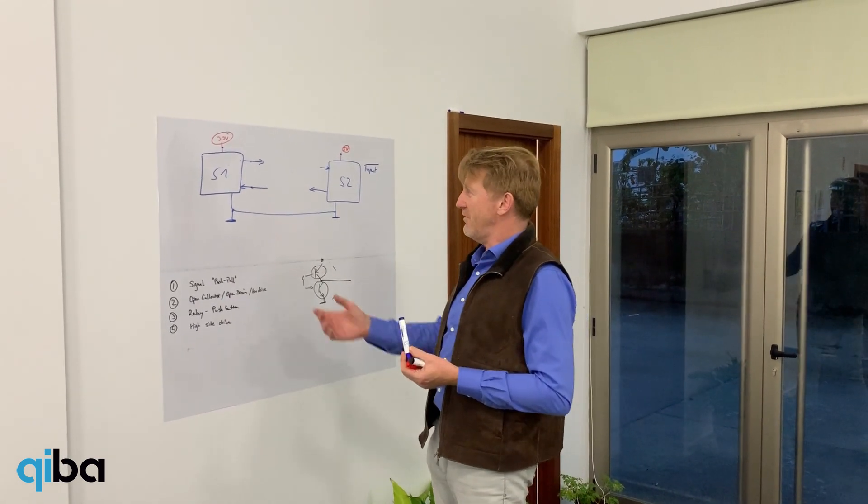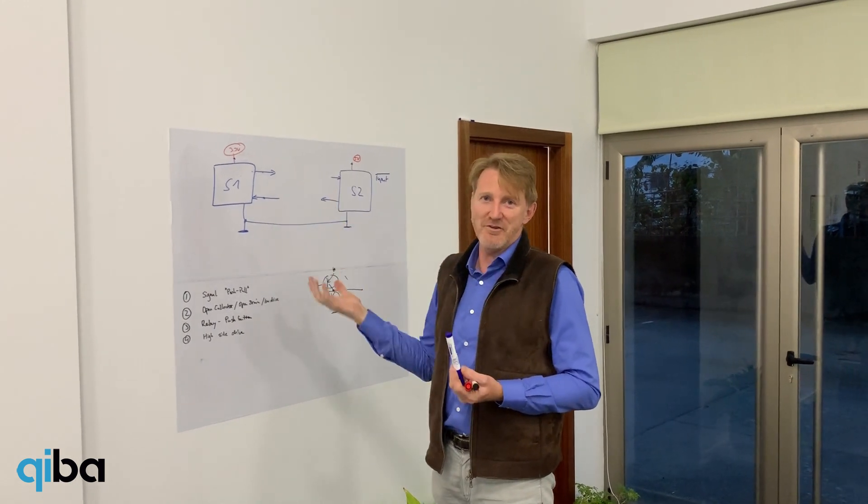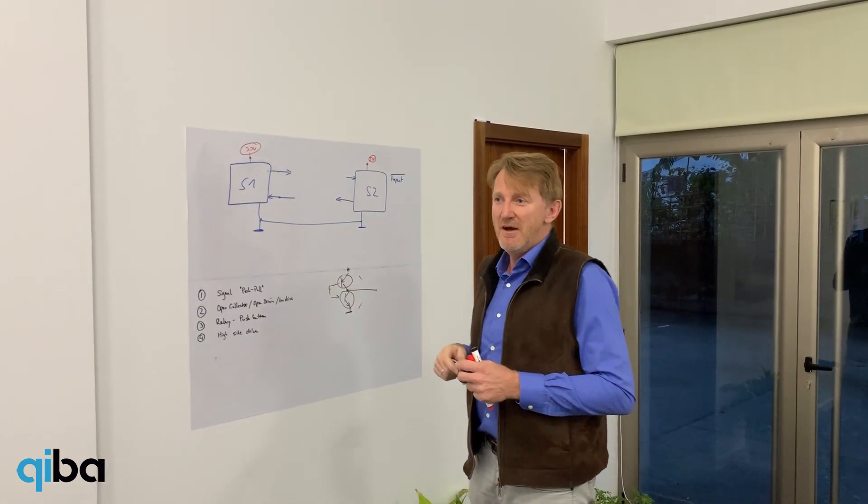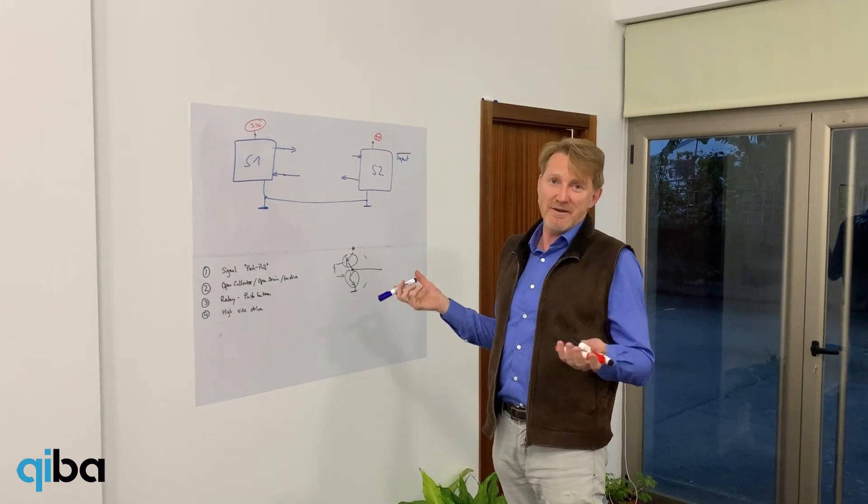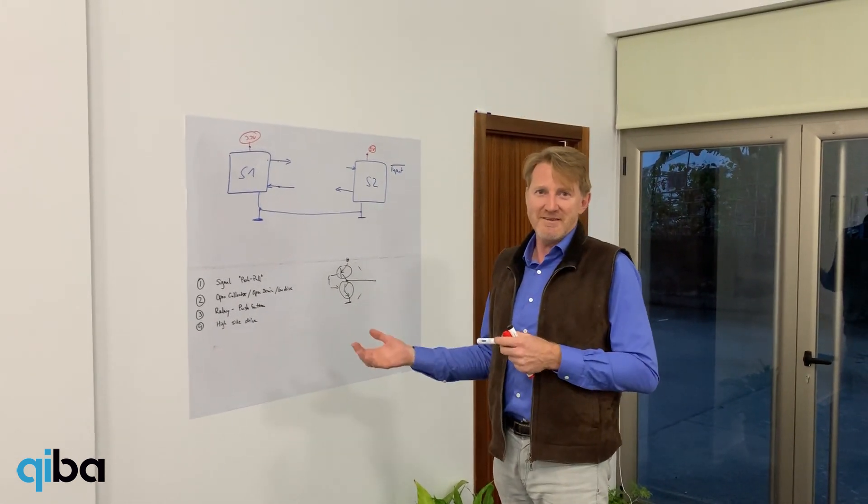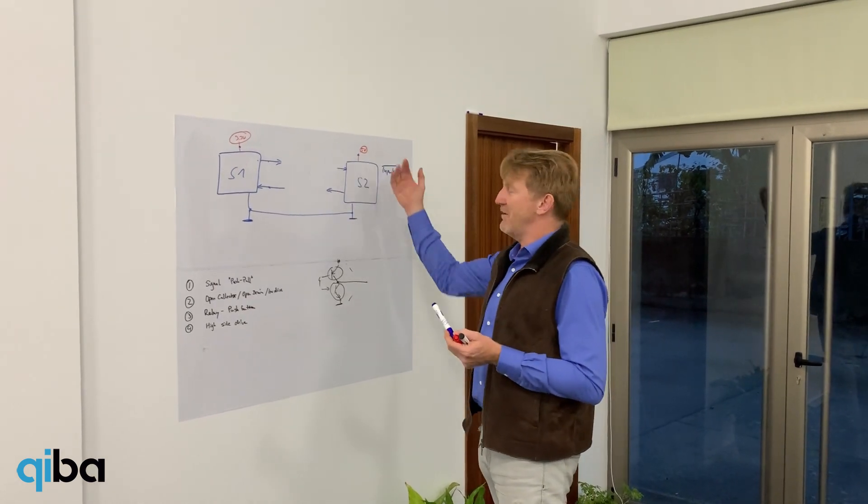That is a common question if you have two systems which want to talk about a digital interface. There are different technologies, different voltages used by embedded systems. Typically Arduinos, Pis, you have 3.3 volts, you have 5 volts.